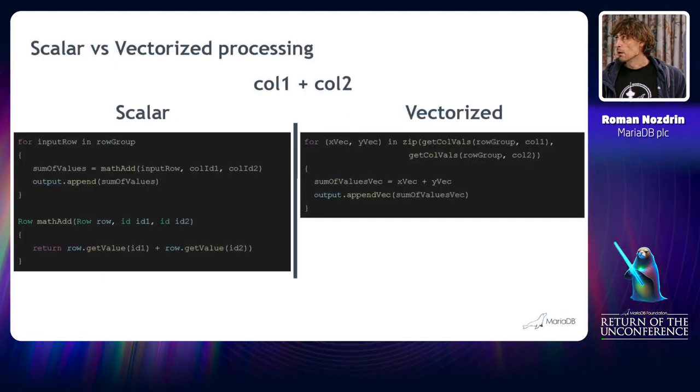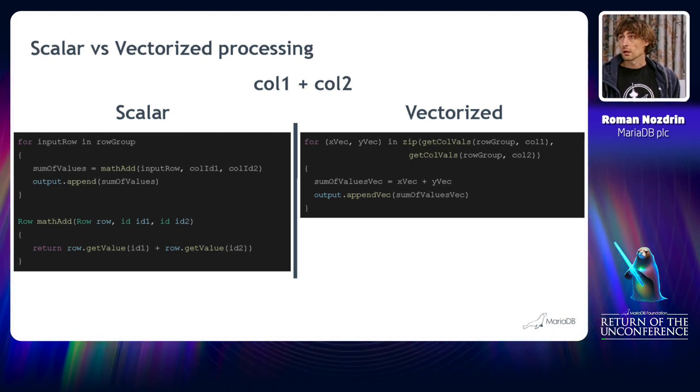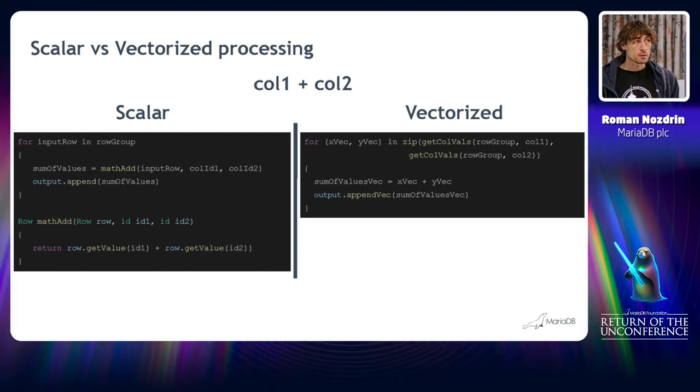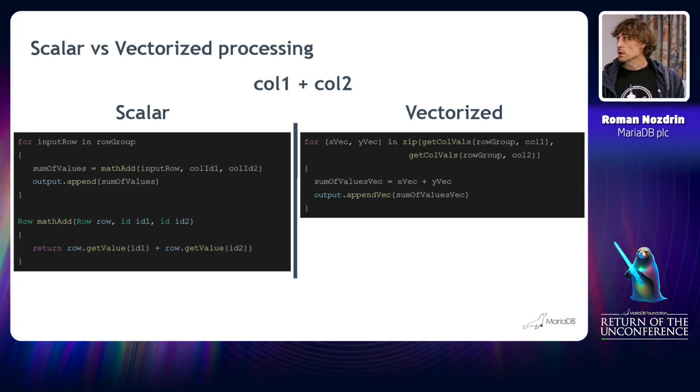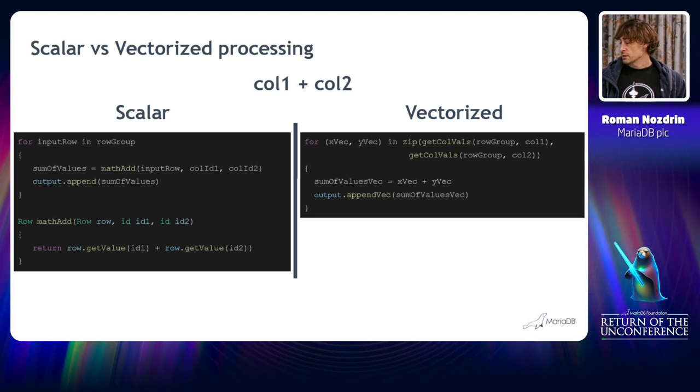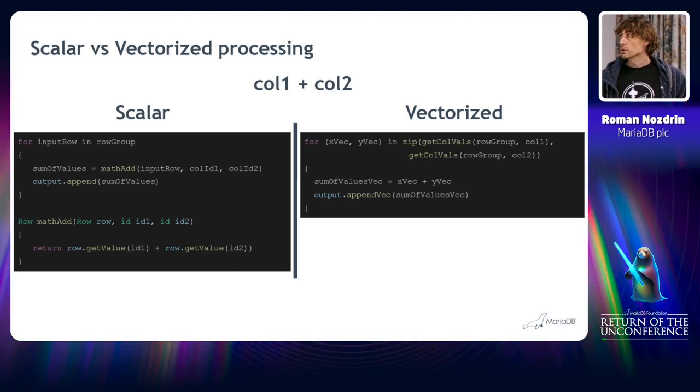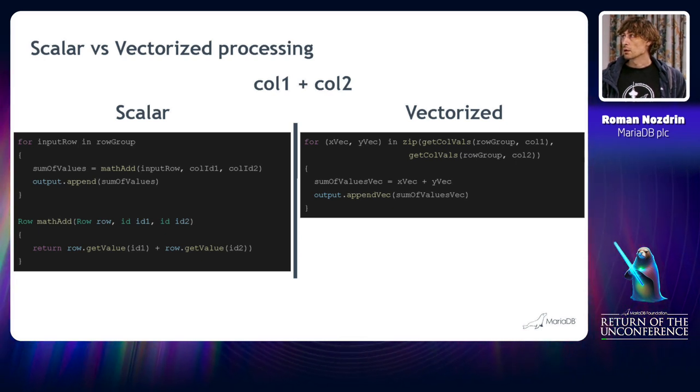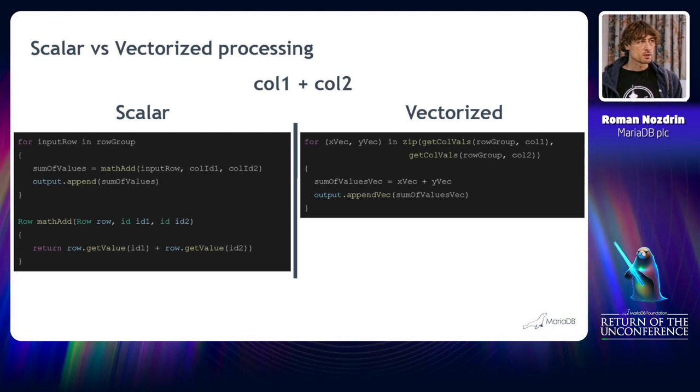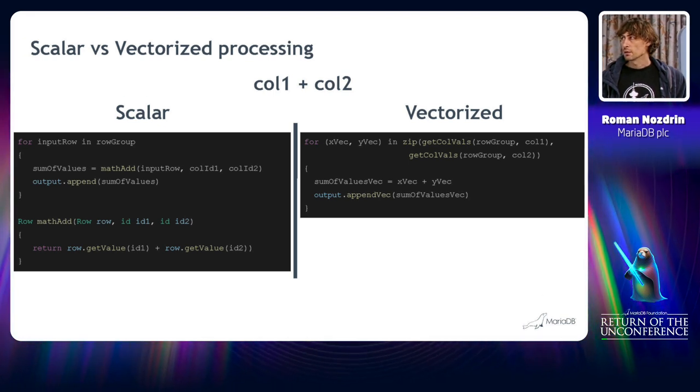Many of you should know what vectorization is, but for those who are not familiar, I will touch grounds with that. Here are two pseudocode snippets that demonstrate the processing of scalar values and there is a counter example for vectorized execution. As you can see at the top, we are talking about this particular expression, a simple one, a mathematical addition. On the left we see that we iterate over the rows in a certain row group and we just get the value of the column and sum these values up. After that we append the resulting value into the output. That's how scalar processing works.